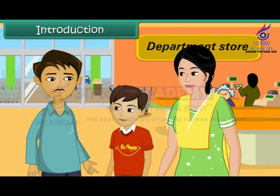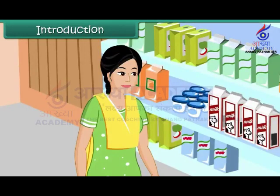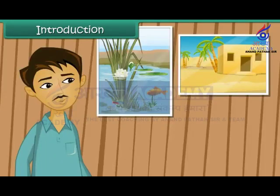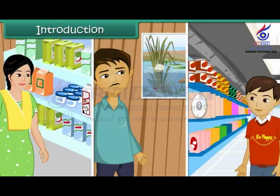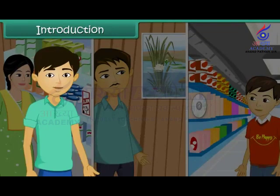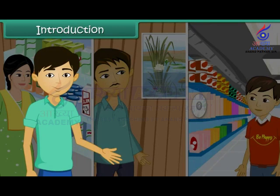You are in a department store with your parents. Your mother wants to pick up grocery, your father wants to look at some paintings, and you want some music DVDs for yourself. The three of you head in three different directions in the department store, because all the objects in the store are categorized into different sections according to their types. Such organization is convenient and leads to better management.